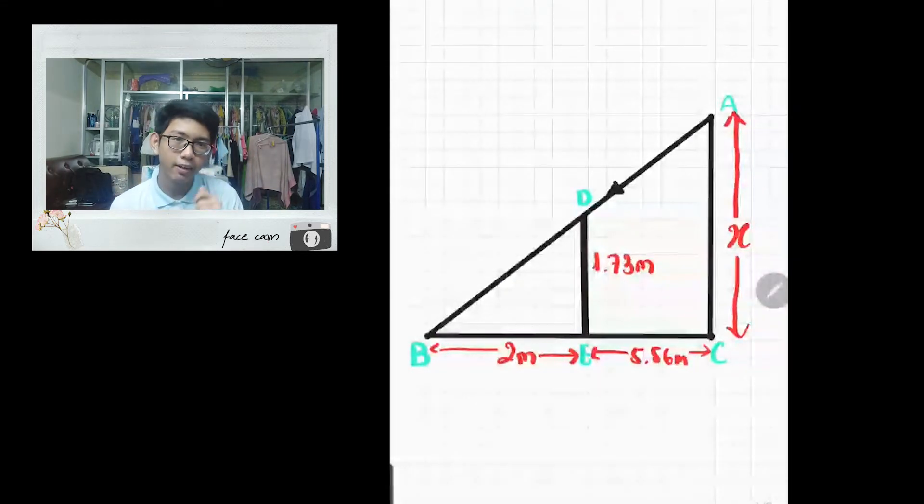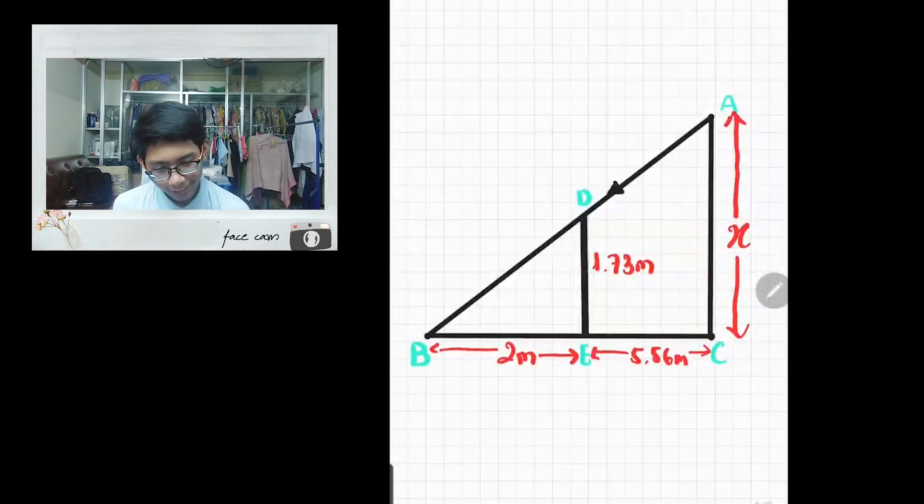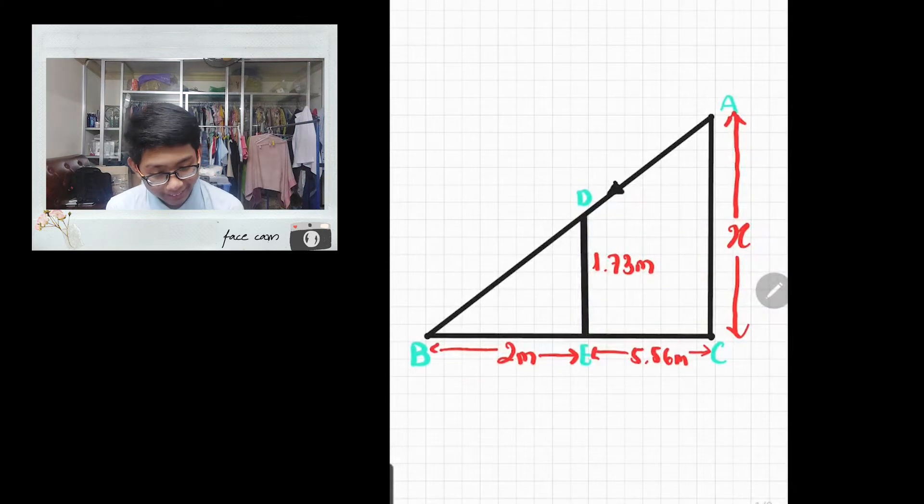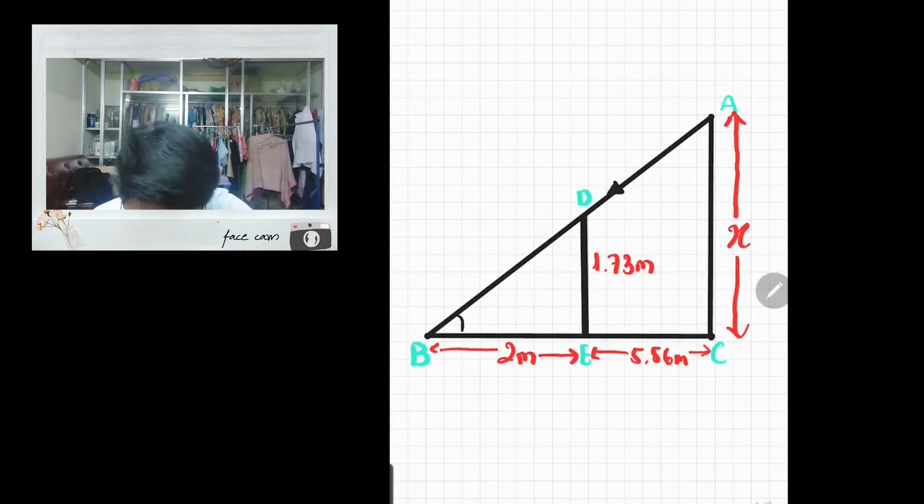Let's continue to look next. Angle ABC would equal to angle DBE because they share the same vertex.